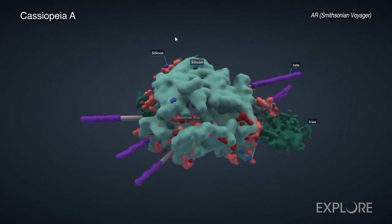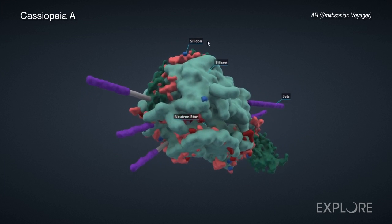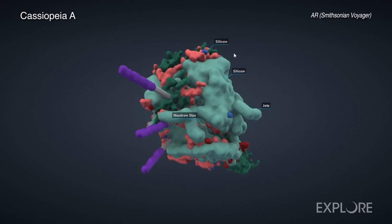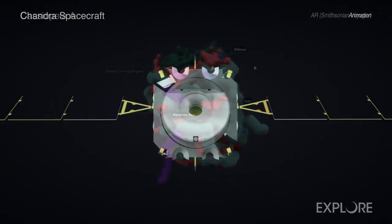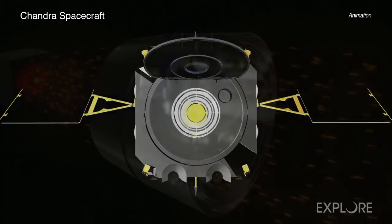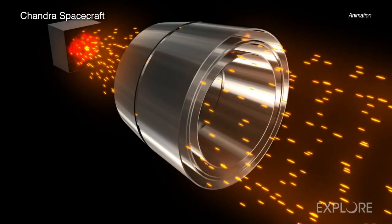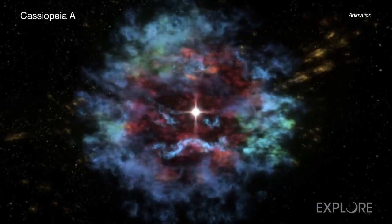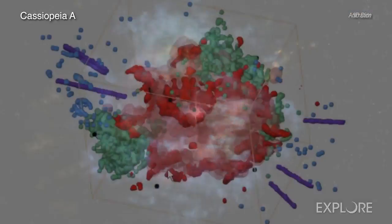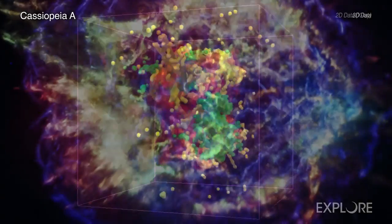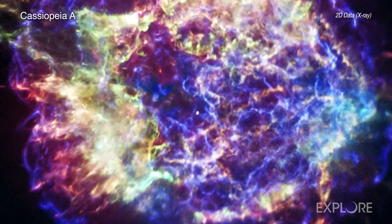The current suite of Chandra 3D models in Voyager features stars in various phases of the stellar life cycle. Through a variety of techniques, astronomers have captured data from Chandra and other telescopes from these stars and constructed science-based simulations and 3D models of what had previously been represented as flat, two-dimensional projections on the sky.